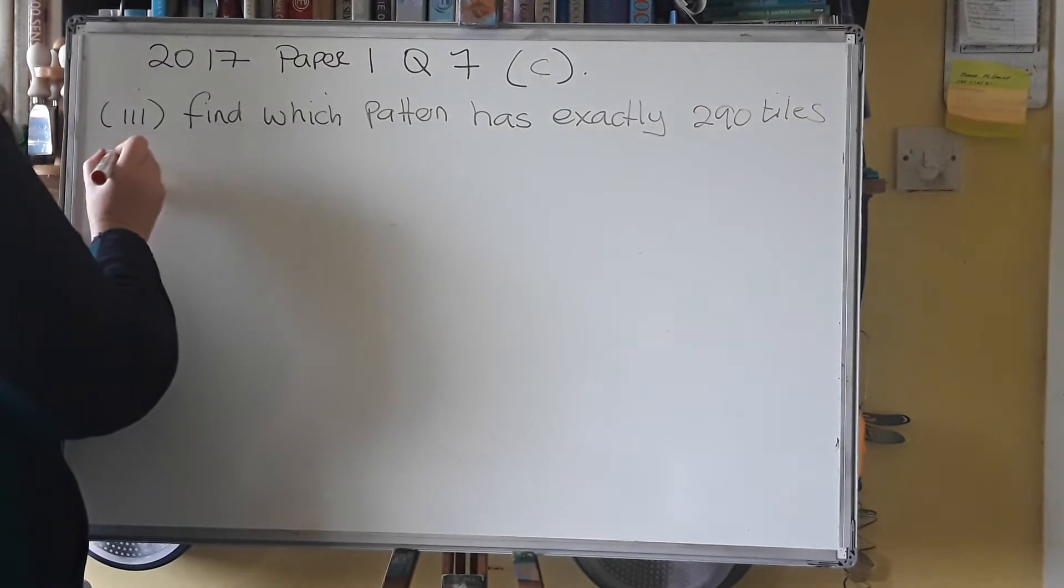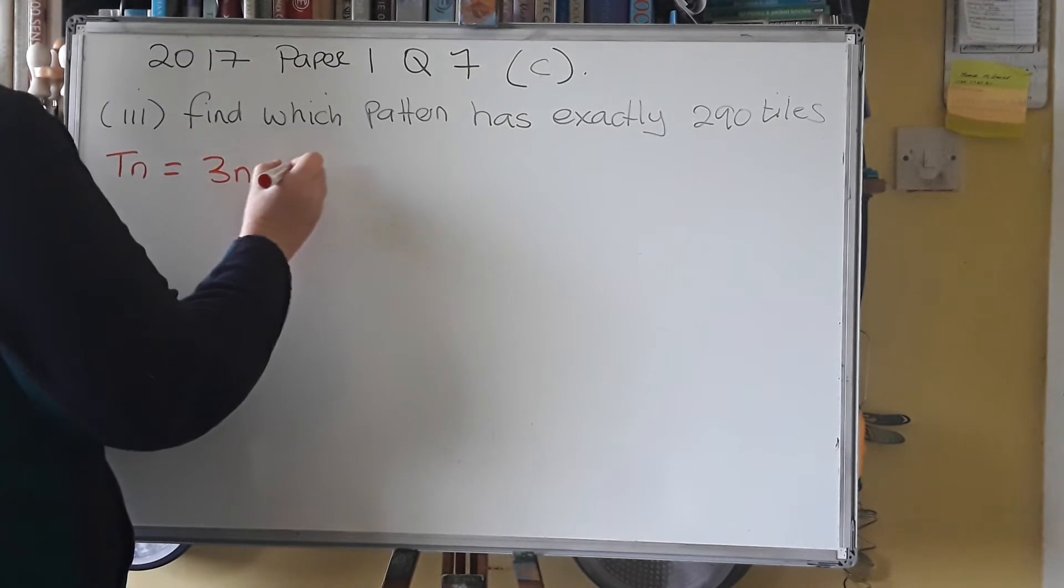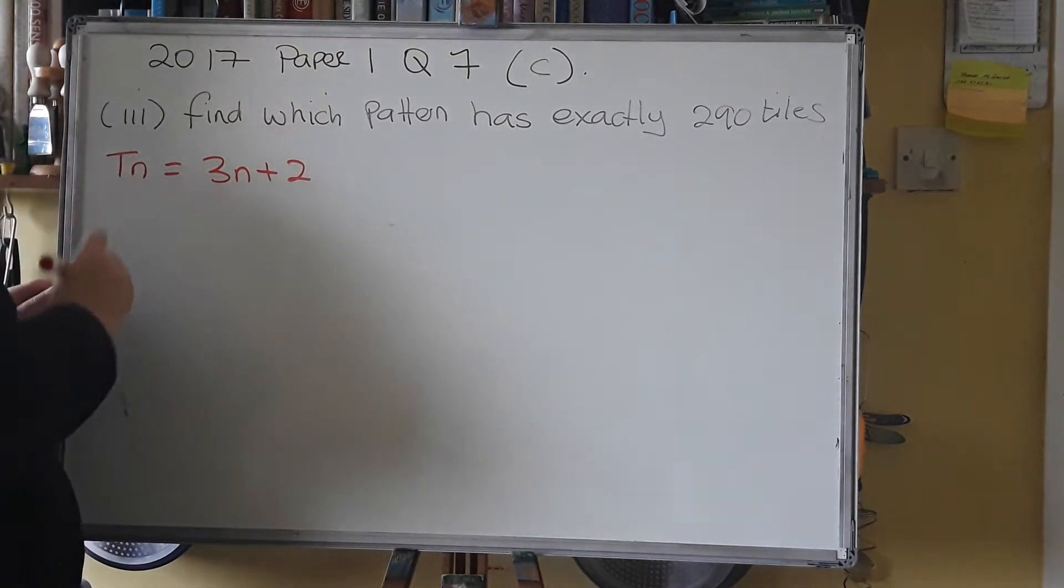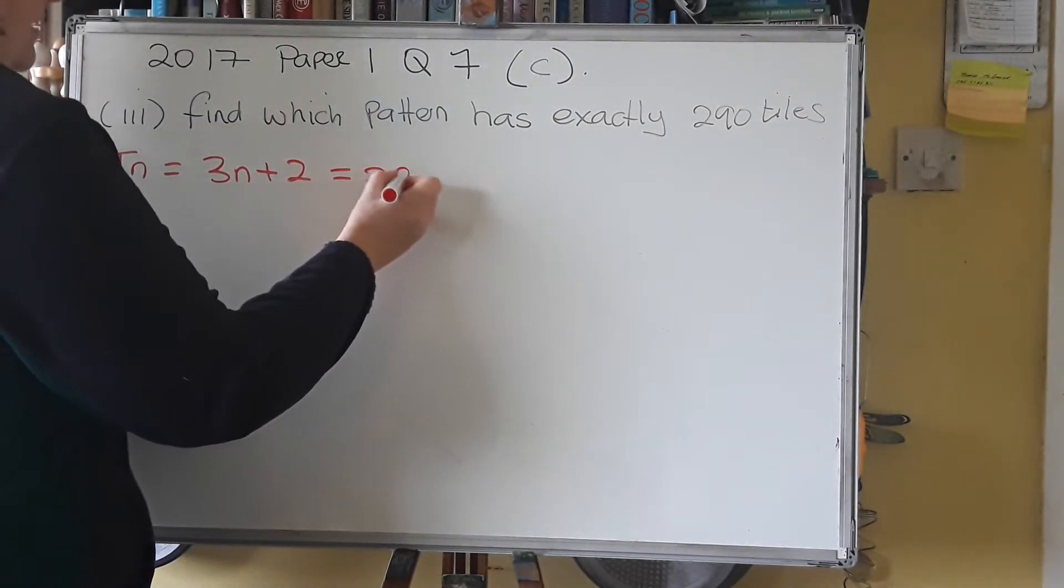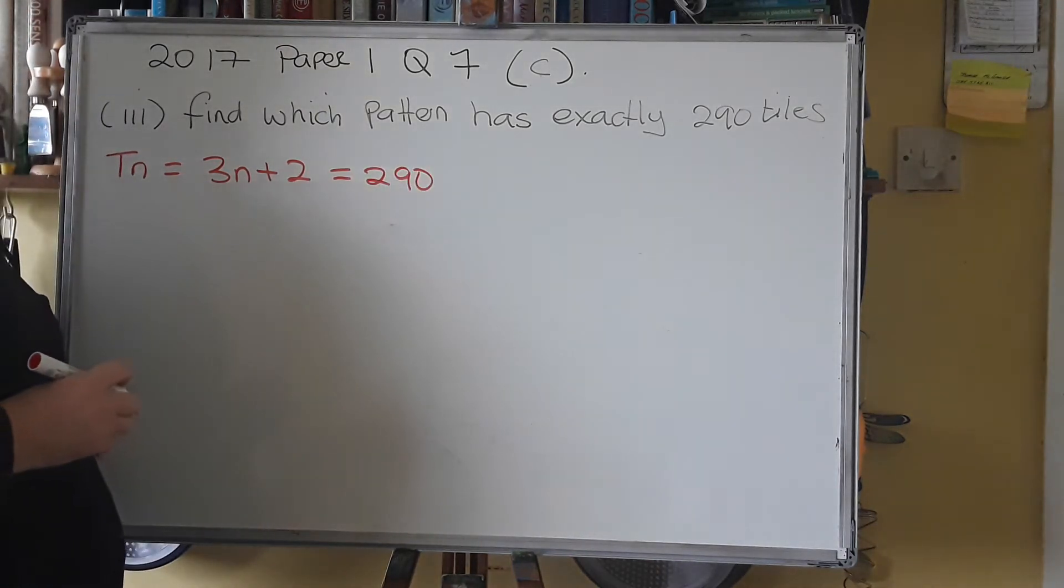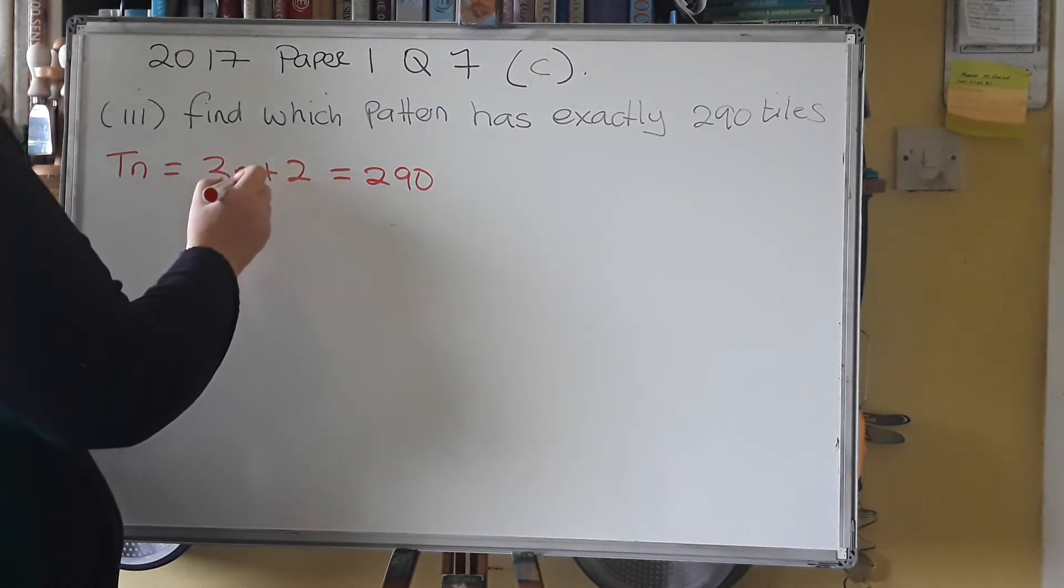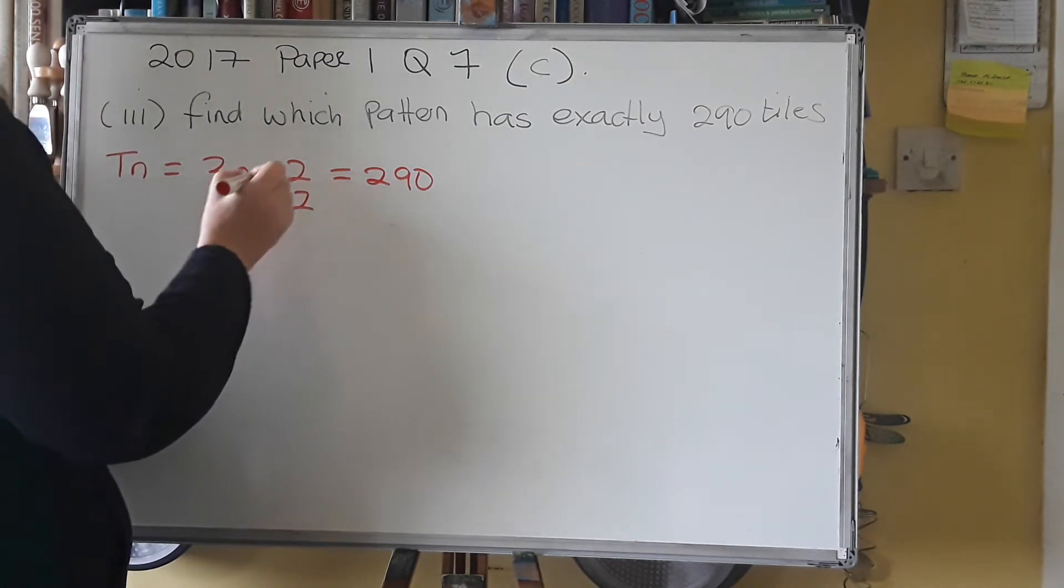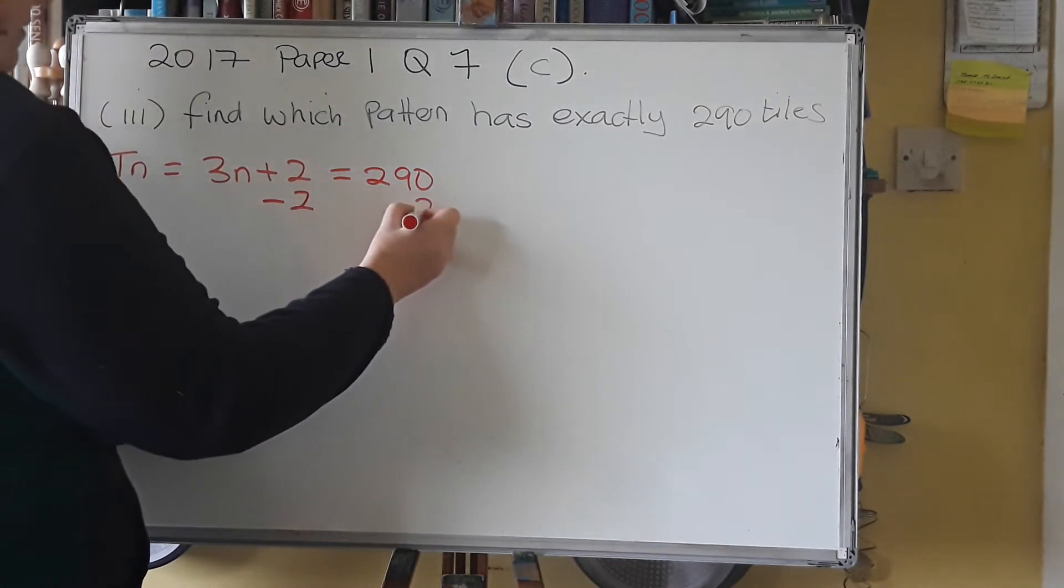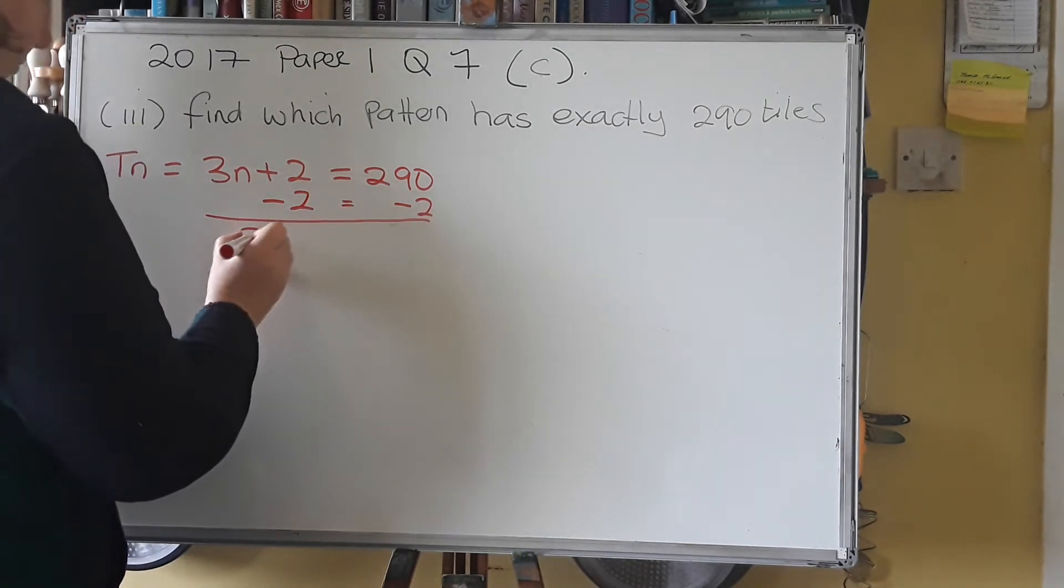And we know that Tn equals 3n plus 2. But this time we're trying to find out what n. We don't know what n is. But what we do know is that this is equal to 290. We know that has exactly 290 in it. So what you want to do is you want to isolate the n. You want the n on this side and the numbers on this side. So I'm going to take that 2 away from there to get to 0. Whenever you do to the equals, you do to the other side of the equals. So here we're left with 3n.